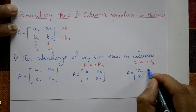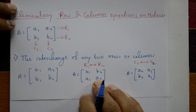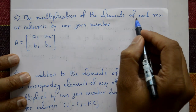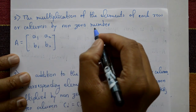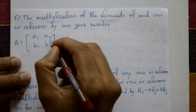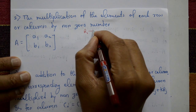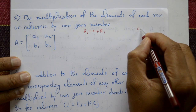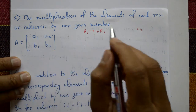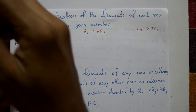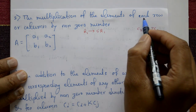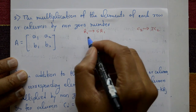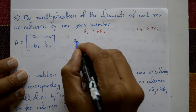Second point: the multiplication of the elements of each row or column by a non-zero number. For example, take row r1: we write r1 equal to 5 into r1. Or take column c2: we write c2 equal to 3 into c2. You multiply only the selected row or column by the non-zero element.